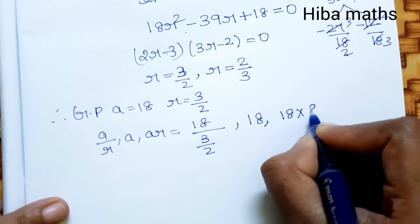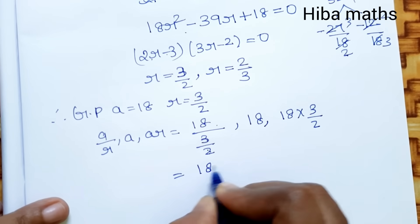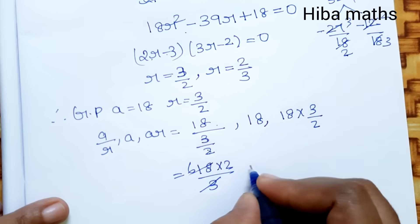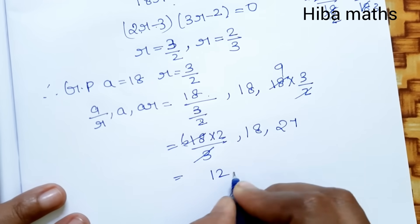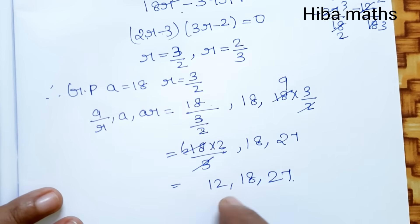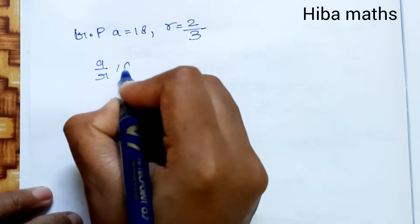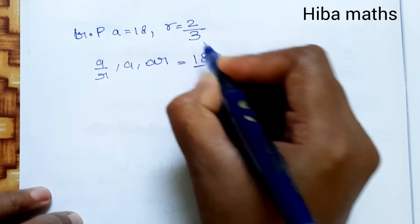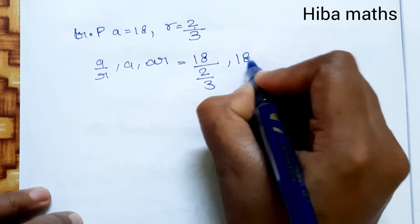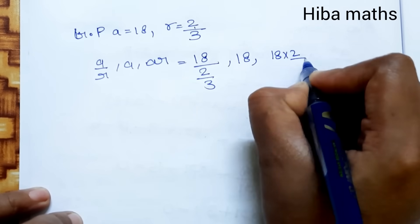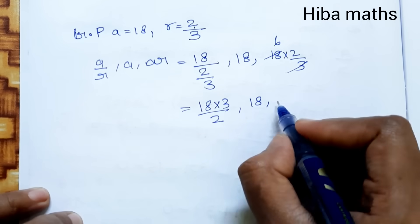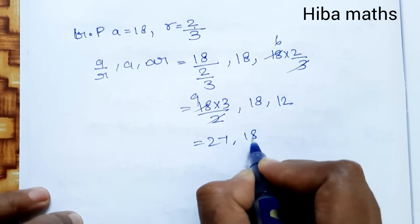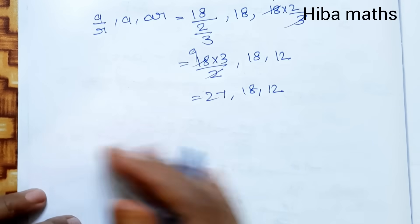Substituting: a/r equals 18 divided by 3/2 equals 18 times 2/3 equals 12. a equals 18. ar equals 18 times 3/2 equals 27. So the three numbers in GP are 12, 18, and 27.